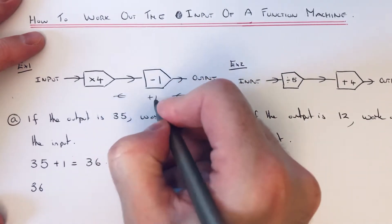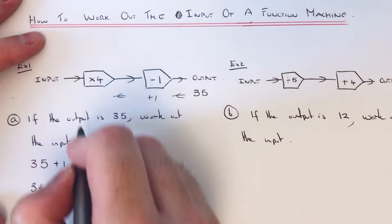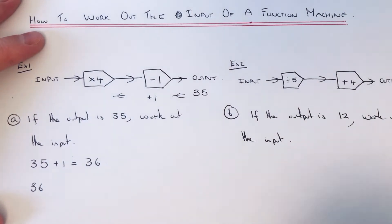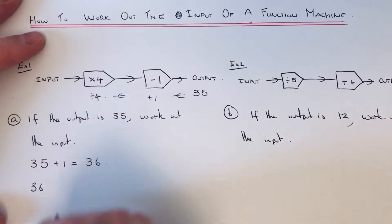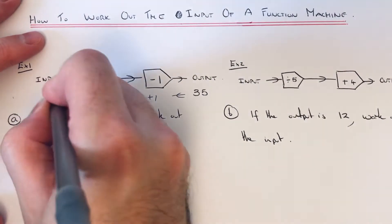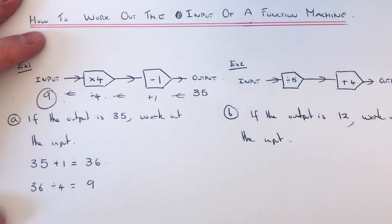Then our next inverse is the opposite to times 4. So the opposite of times 4 is divided by 4. That is our next operation to do. So if we do 36 divided by 4, that gives us an answer of 9. So our input would be 9.